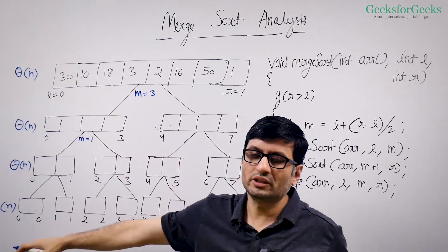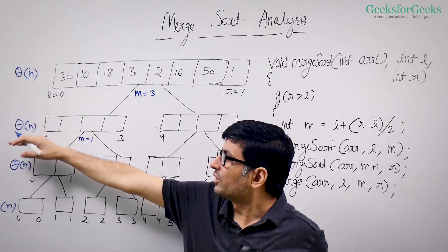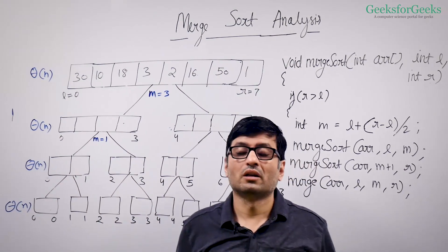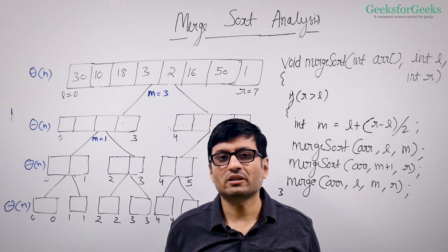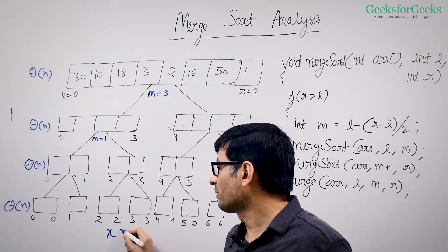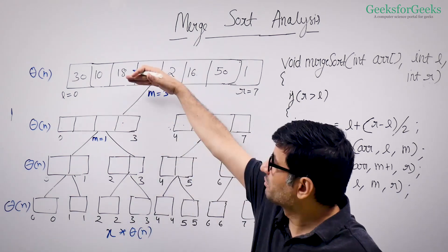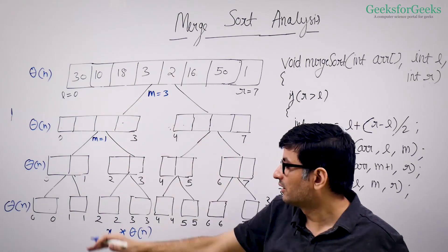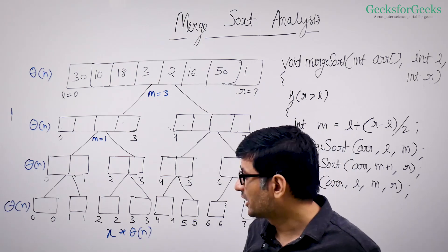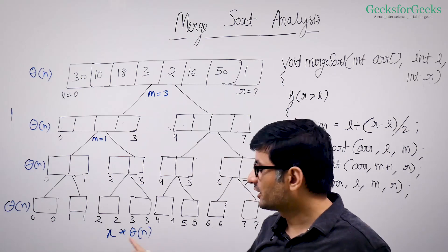So we are doing theta(N) work at every level — almost the same work at every level. Now, if we can figure out how many levels there are, say X levels, then the total time complexity is going to be X times theta(N), since we do theta(N) work X times.